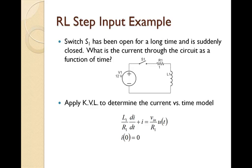We'll recall our water system analogy: a resistor is like a pipe restriction or a narrower pipe, and the inductor acts like a paddle wheel. Before the switch closes, there's no current flow — it's an open circuit. As soon as the switch closes, that's analogous to turning on a pump and providing a pressure difference across the resistor and inductor in series.